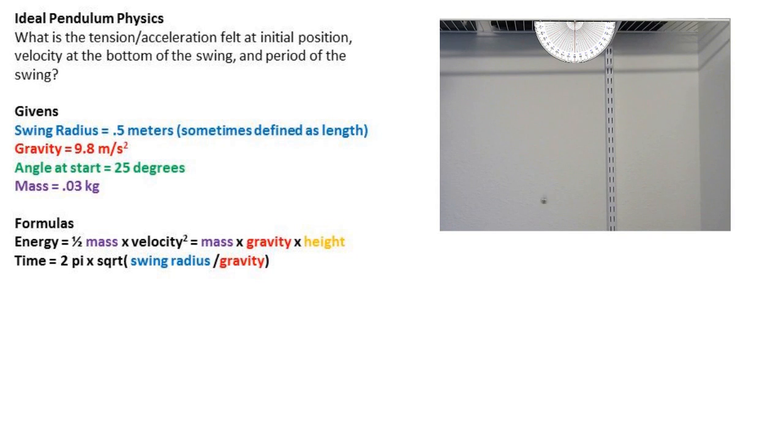Then to find the period, we will be using time equals two pi square root of swing radius divided by acceleration due to gravity.